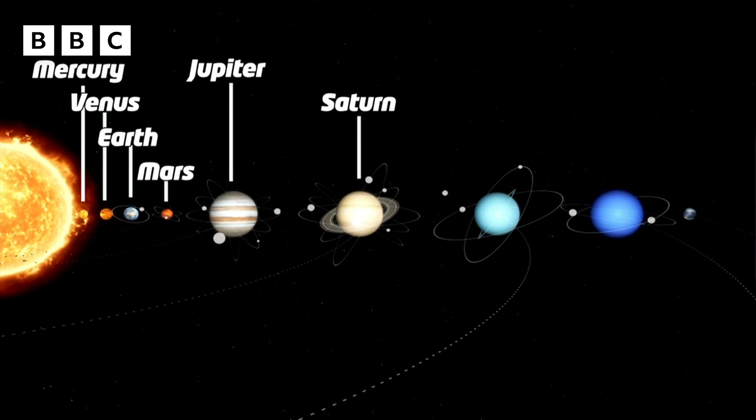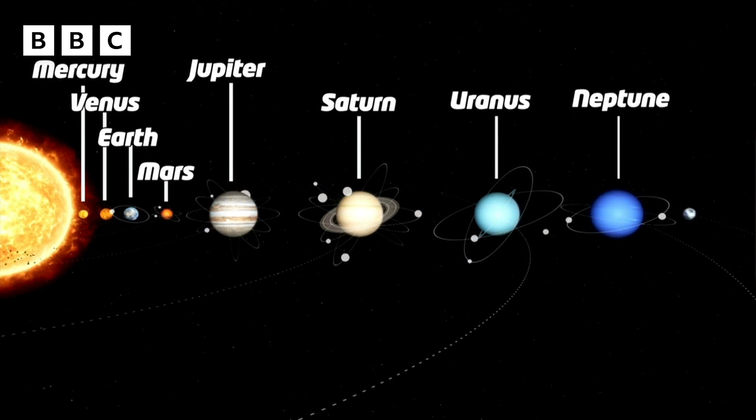Jupiter and Saturn. But as time went on, we started using telescopes to look at space and we discovered a few more planets. These we called Uranus and Neptune, keeping on with that Roman theme.